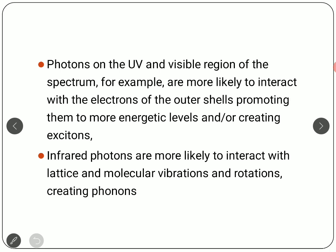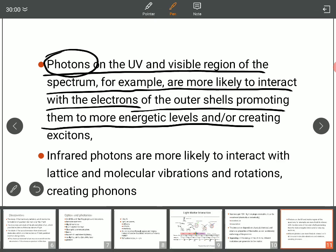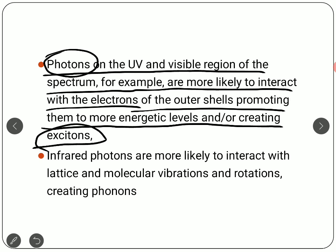Photons in the UV and visible region of the spectrum are more likely to interact with electrons. Photons from UV or visible radiation will come and hit the sample and interact with the electrons of the outer shell. These electrons may gain more energy, resulting in the creation of excitons. Excitons are nothing but an electron and hole pair that moves in tandem. It is very difficult to detect excitons directly because the exciton is neutral, but it is an electron-hole pair which moves around the system in the conduction band — a result of photons from UV or visible light.